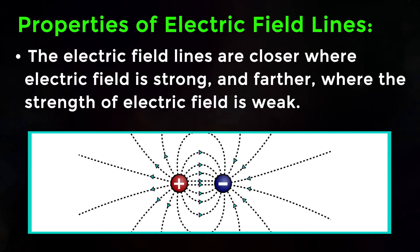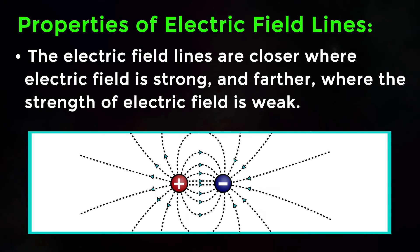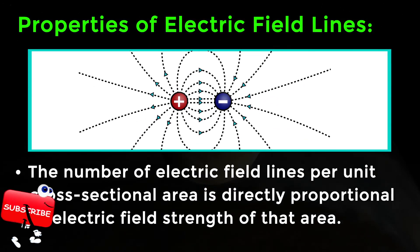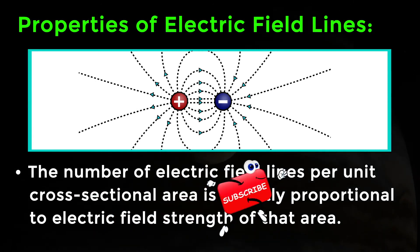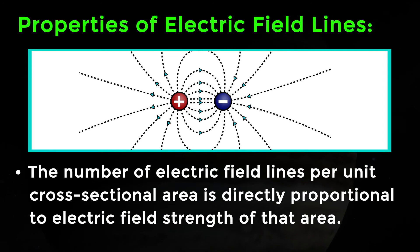The electric field lines are closer where electric field is strong and farther when the strength of the electric field is weak. The number of electric field lines per unit cross sectional area is directly proportional to the electric field strength of that area.